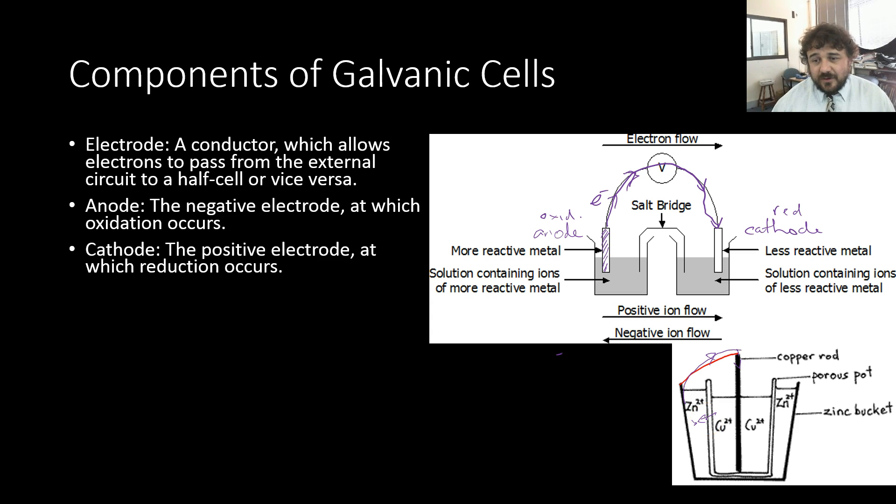Essentially, all of the ion transfer happens through electrolytes. An electrolyte is basically an aqueous or molten solution or substance that conducts electricity. We've got three electrolytes here. If this is zinc over here, that means this is zinc sulfate and this is copper sulfate.